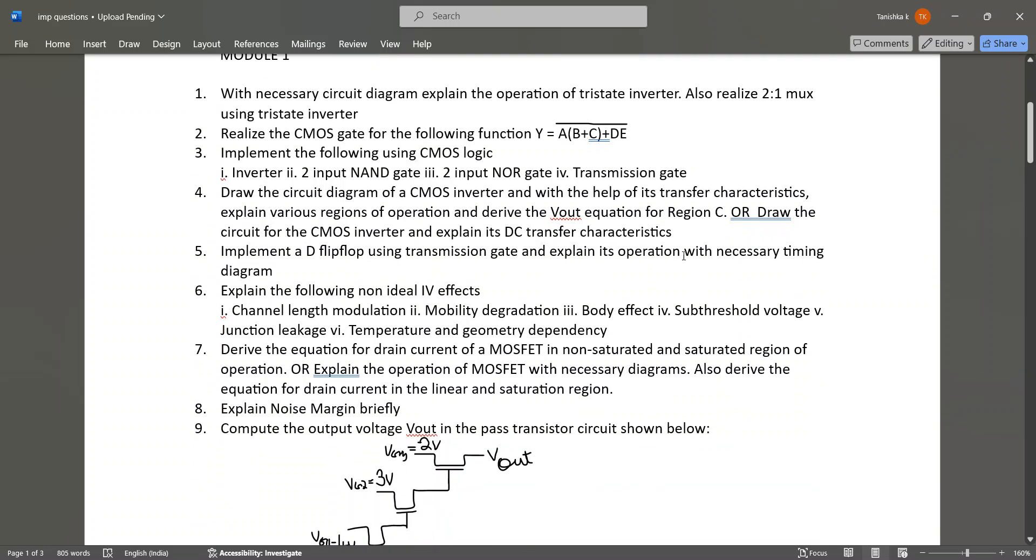Explain the following non-ideal IV effects: channel length modulation, mobility degradation, body effect, subthreshold voltage, junction voltage, and temperature and geometry dependency. Then derive the equation for drain current of a MOSFET in the saturated and non-saturated region of operation.